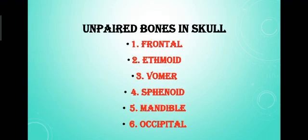Unpaired bones in skulls are frontal, ethmoid, vomer, sphenoid, mandible, and occipital.